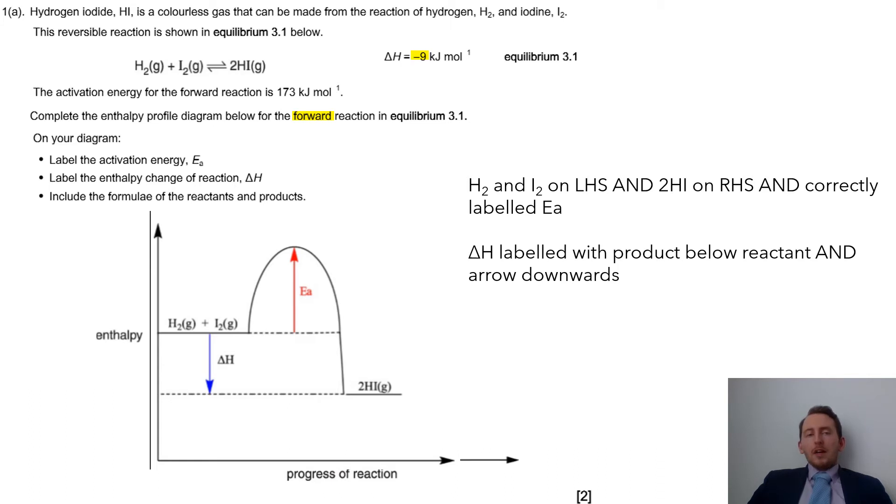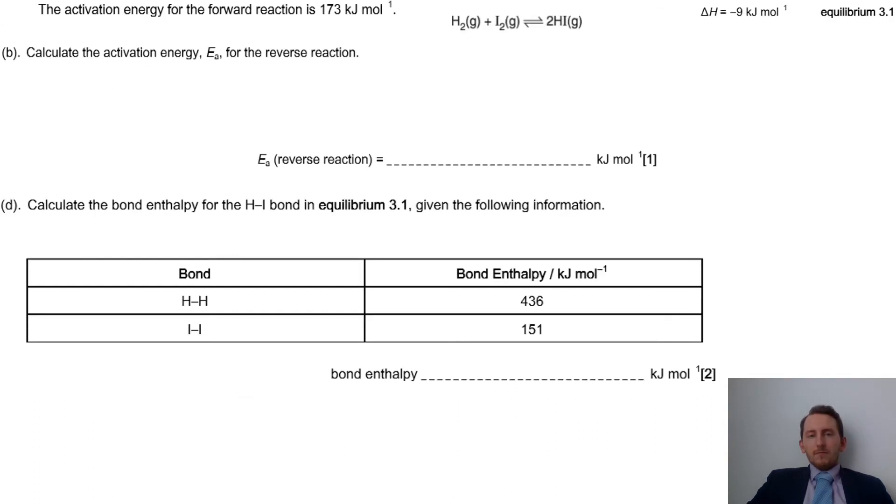Now, if you put on the activation energy being 173 and delta H being minus 9, that would be absolutely fine as well. But if we have those there, then we have 2 marks. OK, and the last part of this question here, I've brought some information over so you can see what's going on, so you're not going back and forth.